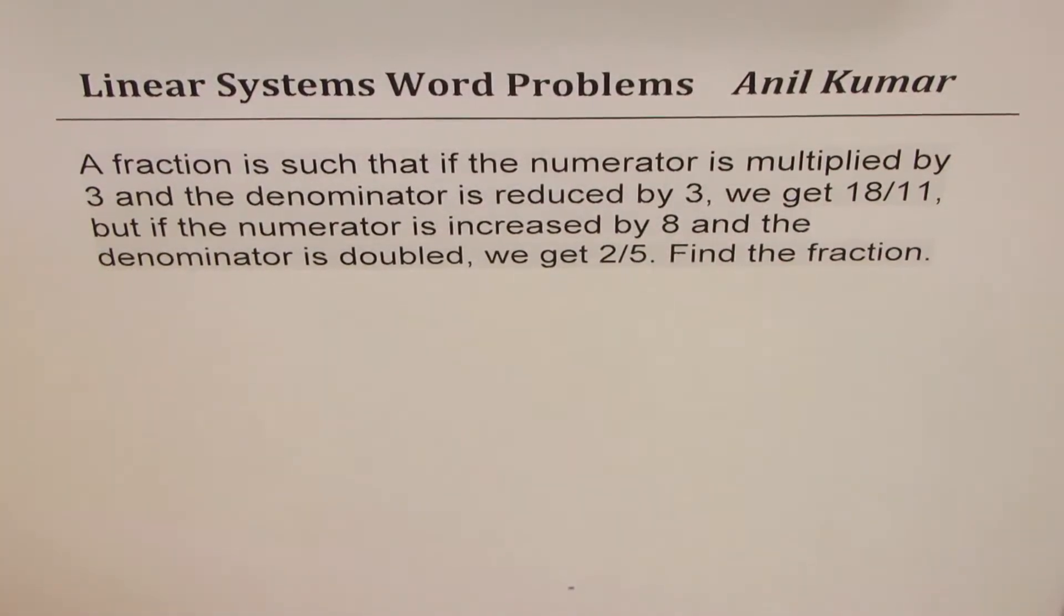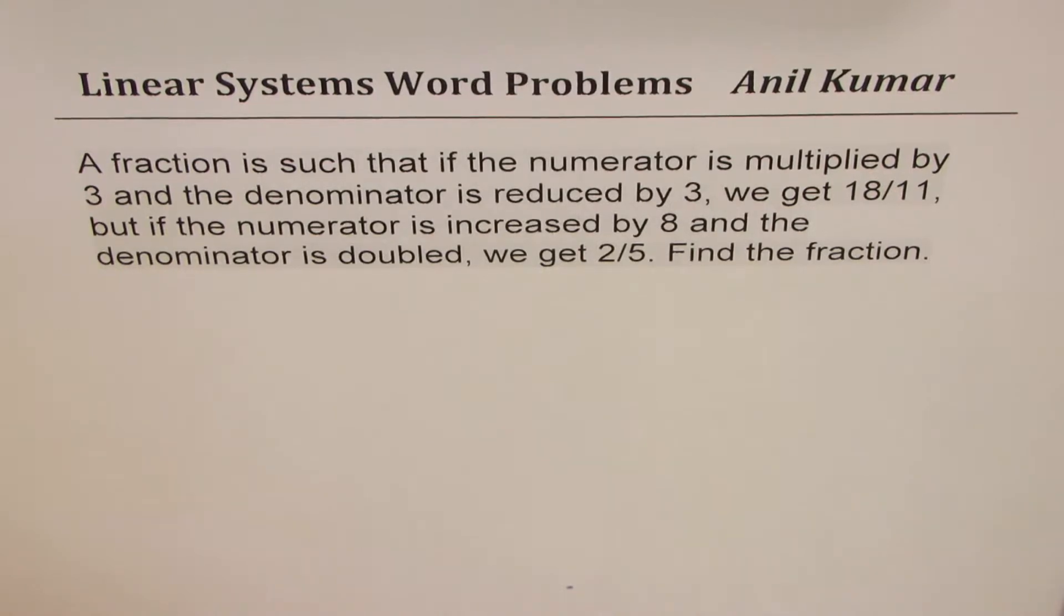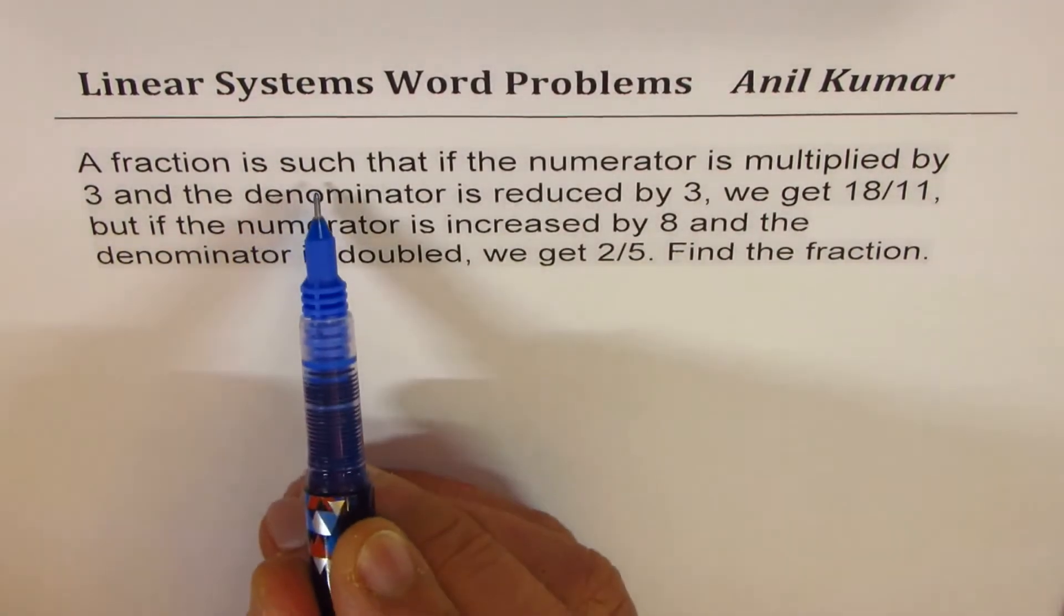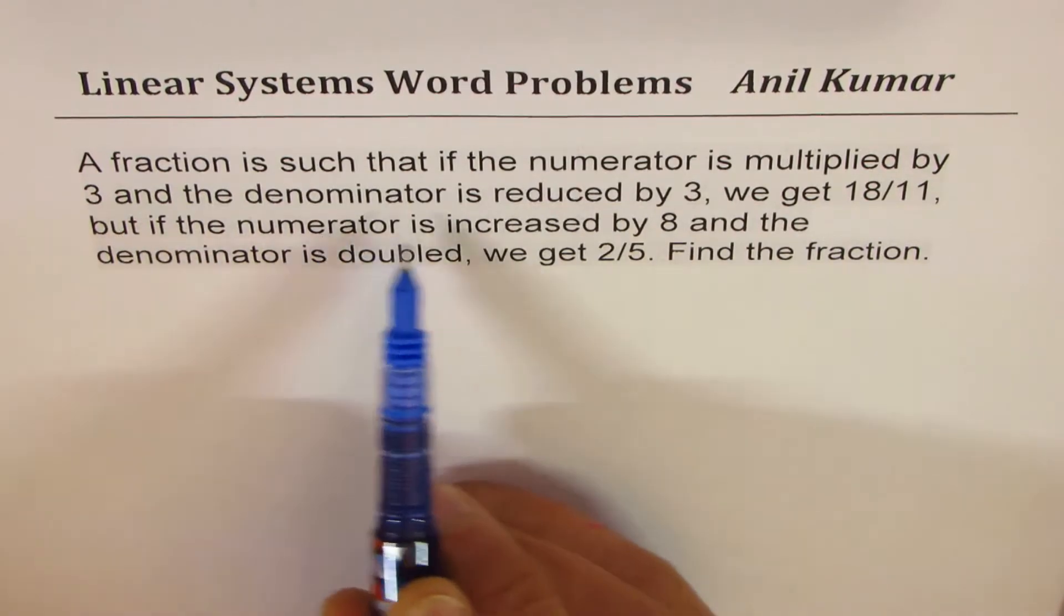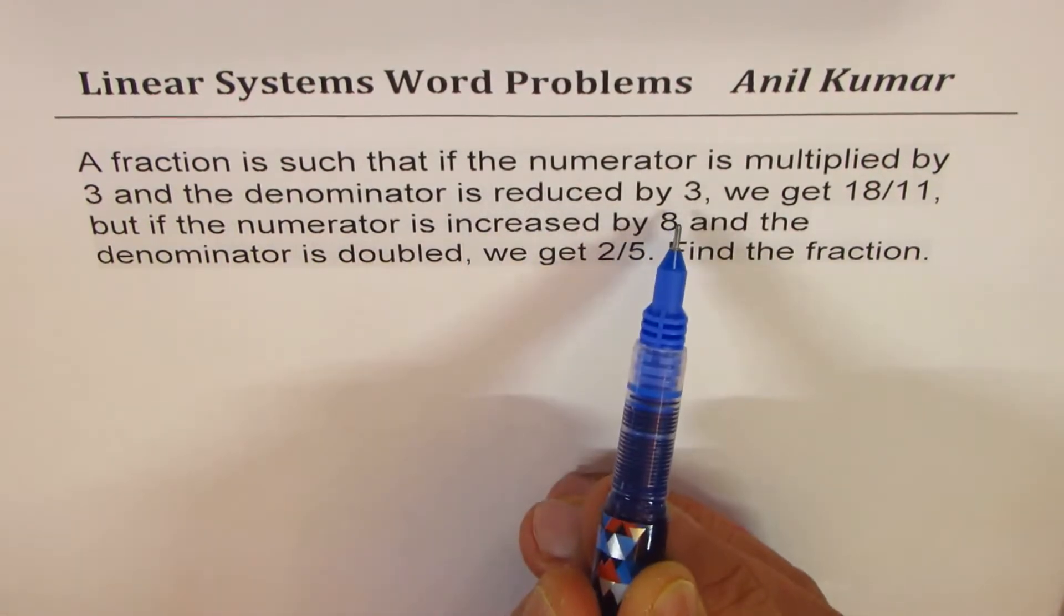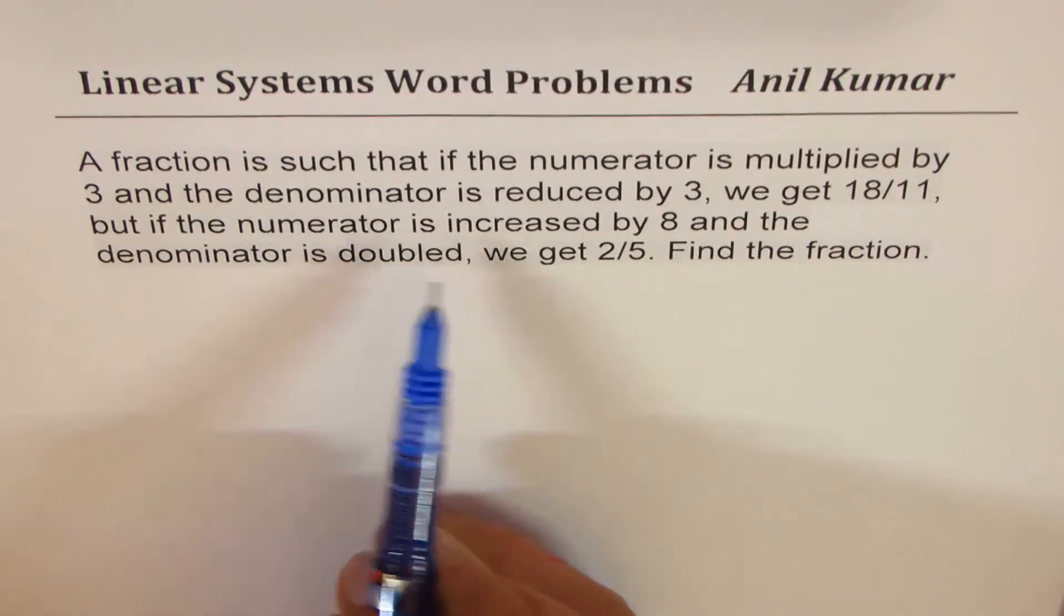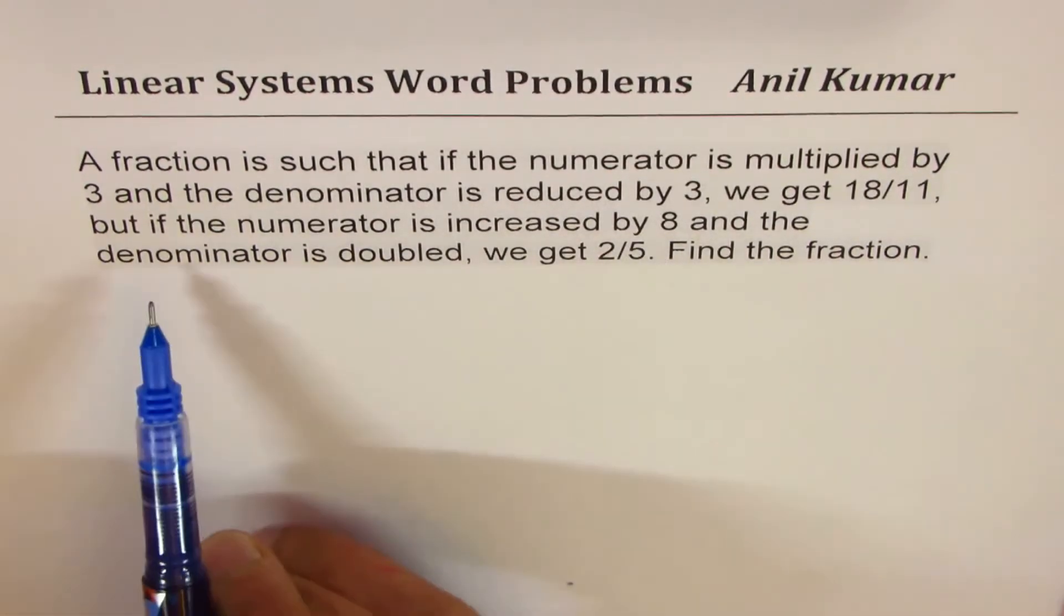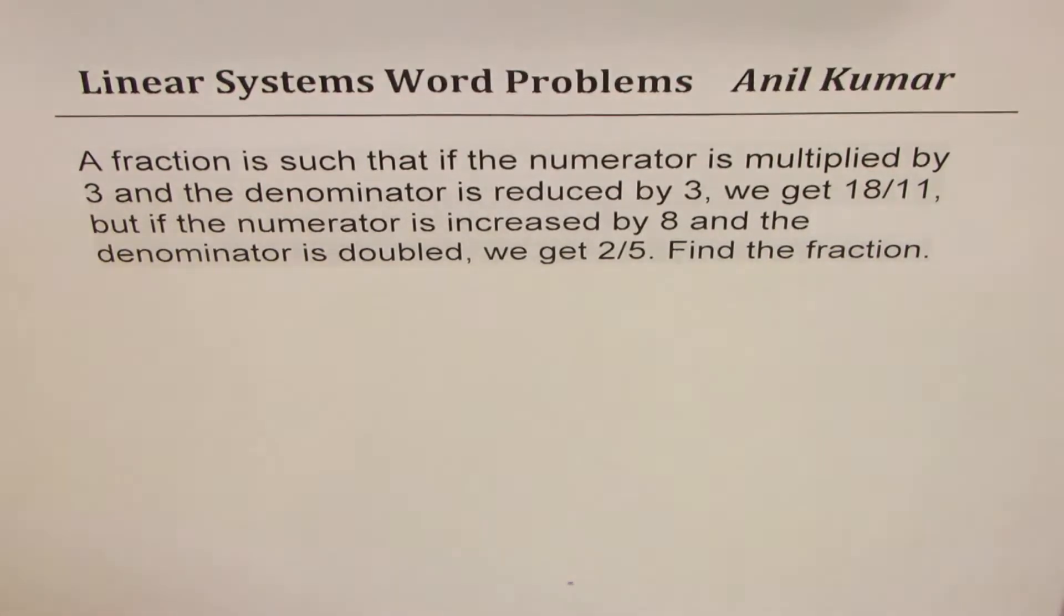I'm Anil Kumar sharing with you a very interesting question based on numbers and it's an application of linear systems. The question here is: a fraction is such that if the numerator is multiplied by 3 and the denominator is reduced by 3, we get 18 over 11. But if the numerator is increased by 8 and the denominator is doubled, we get 2 over 5. Find the fraction.